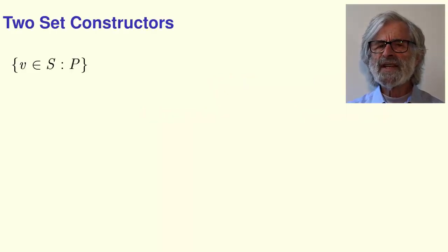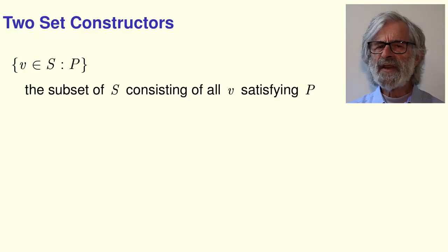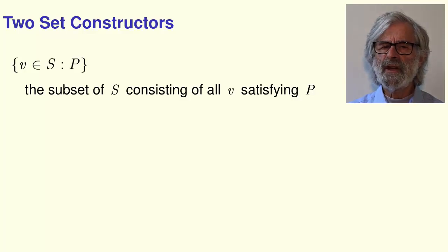These are two different set constructors. The first has the form variable v in set s colon formula p. It's the subset of s consisting of all values v for which the formula p is true.